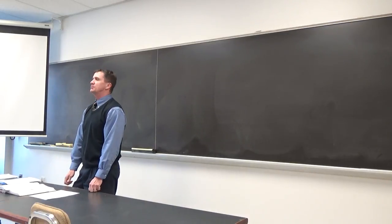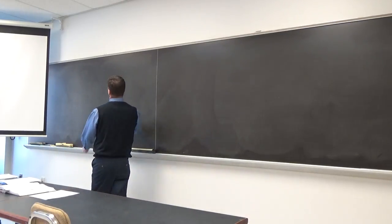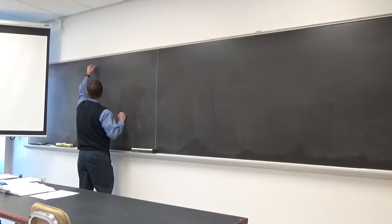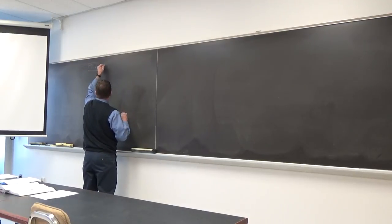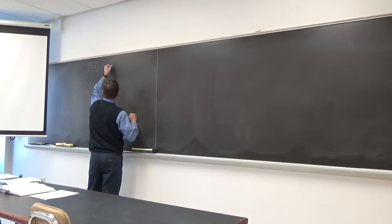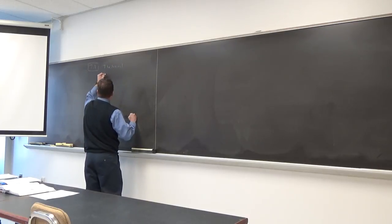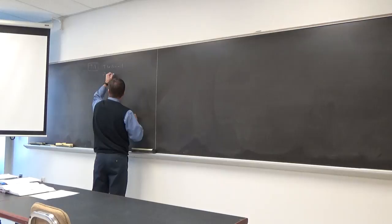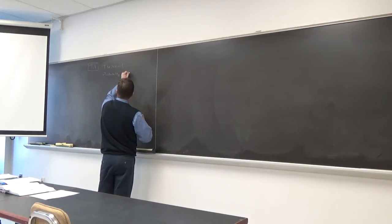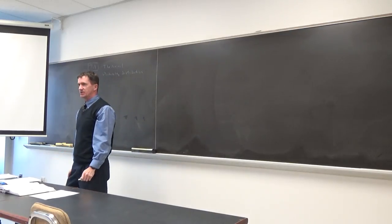We're going to Chapter 7, Normal Probability Distribution. We'll start, of course, in 7.1. This is the normal probability distribution.